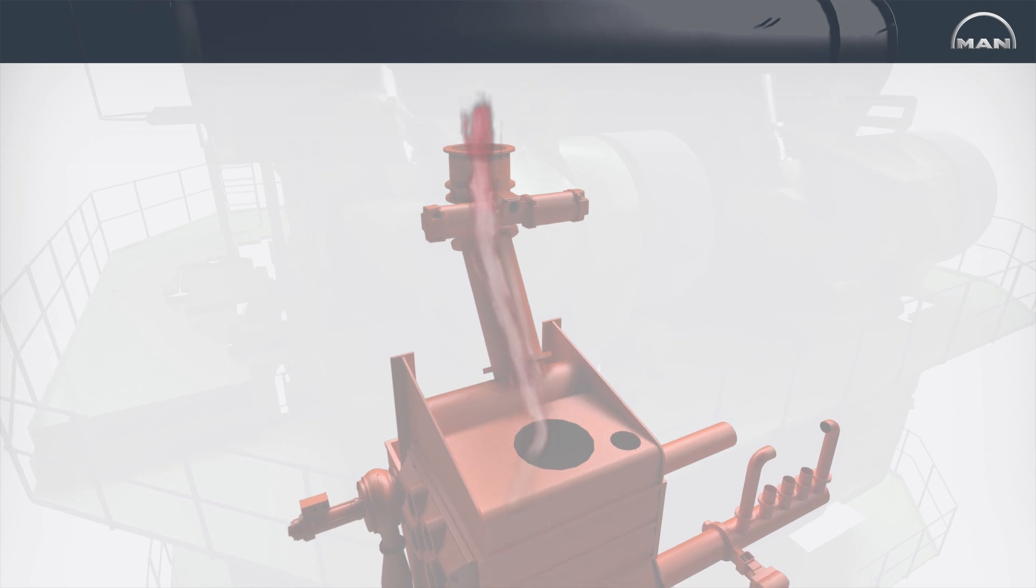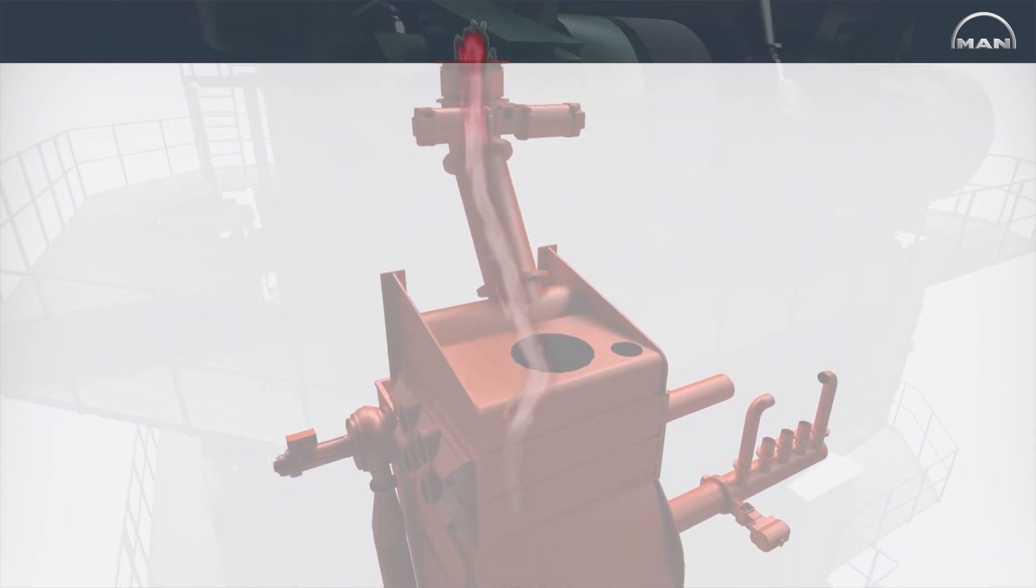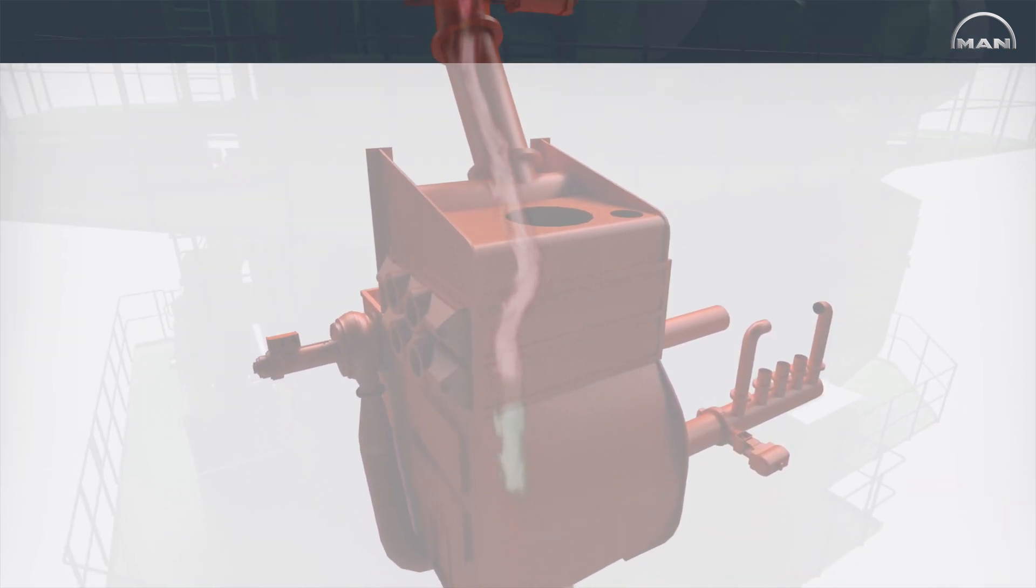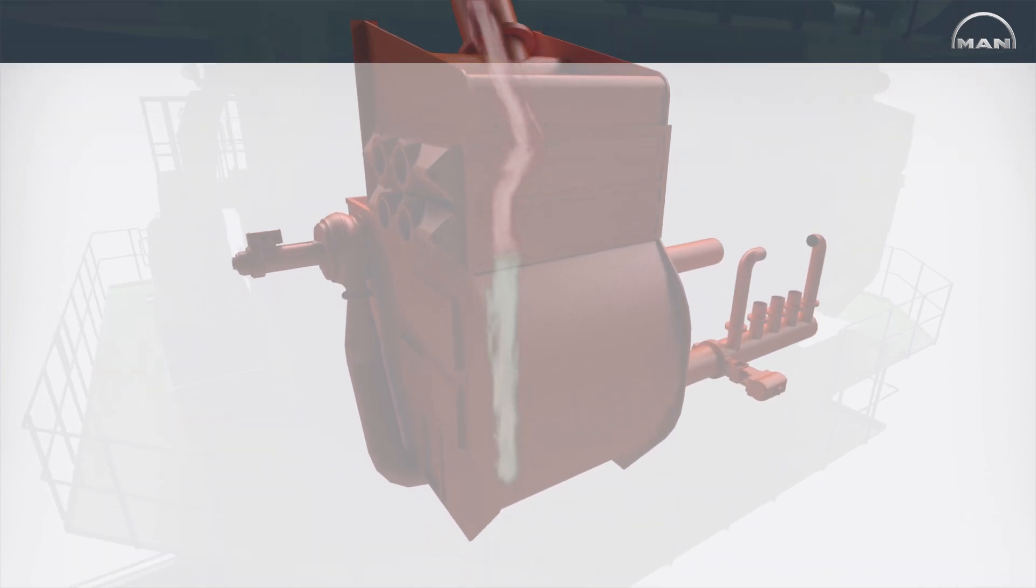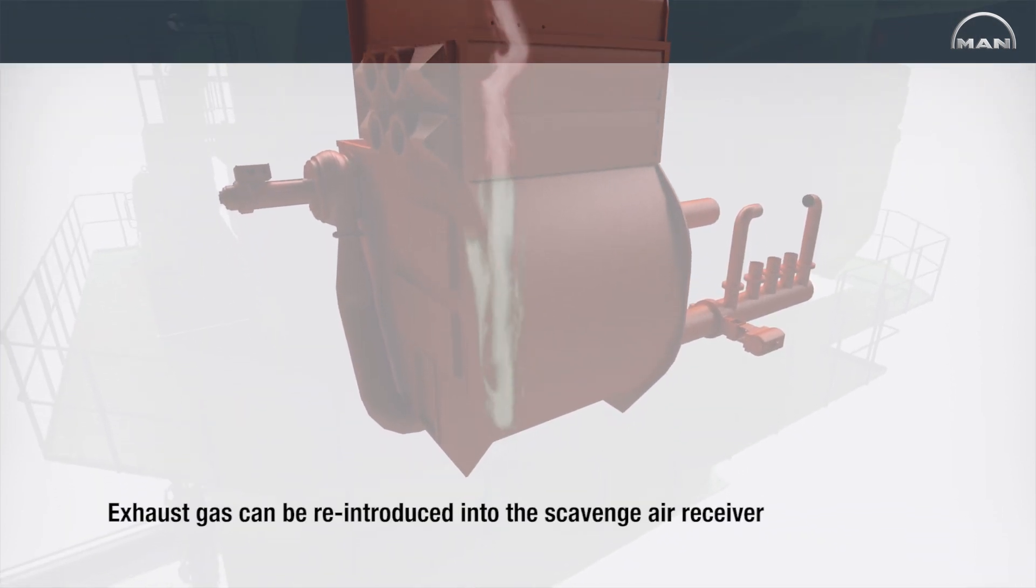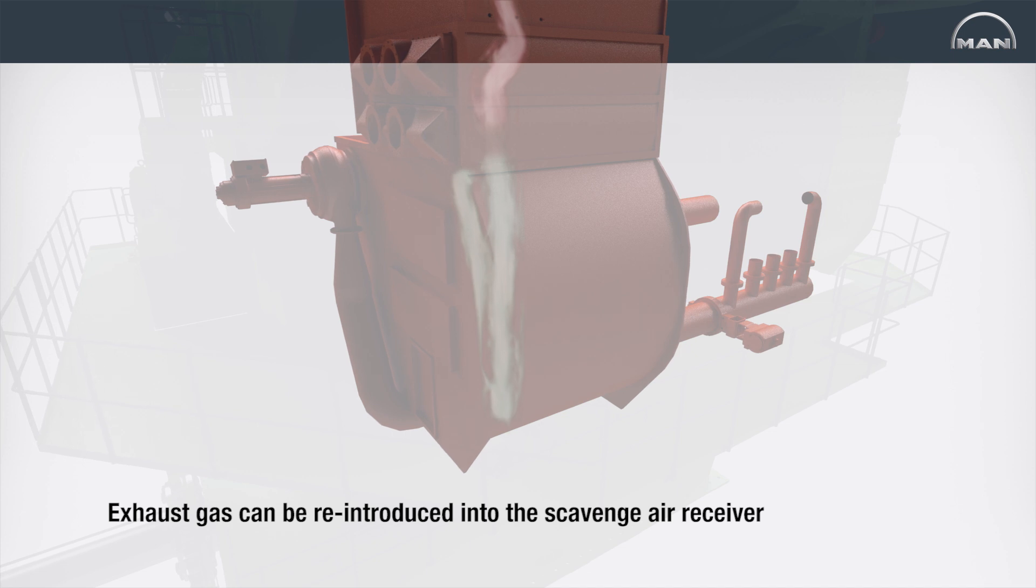From the scrubber unit, the exhaust gas is led through a water mist catcher that traps water droplets and prevents water carryover before the exhaust gas can be reintroduced into the scavenged air receiver.